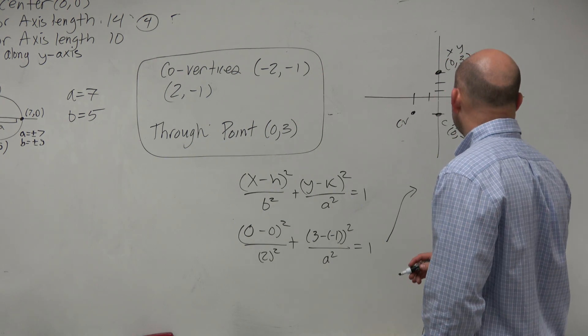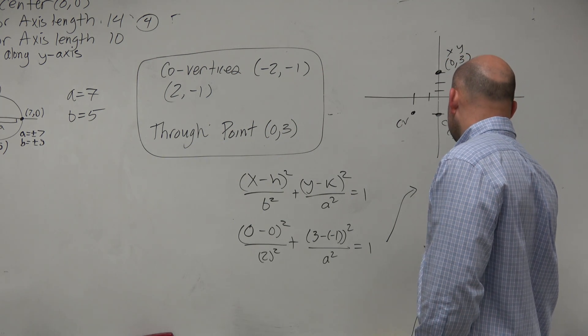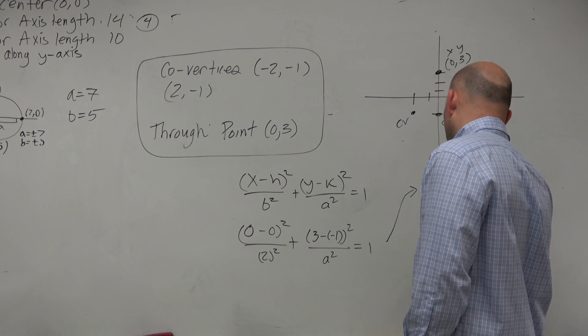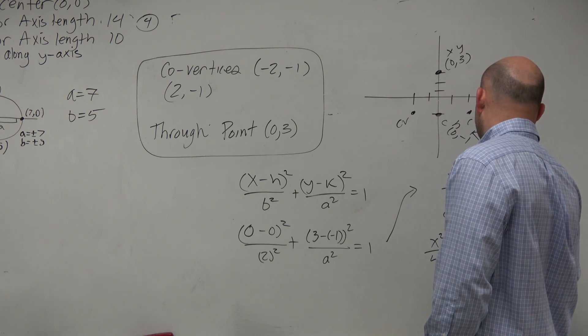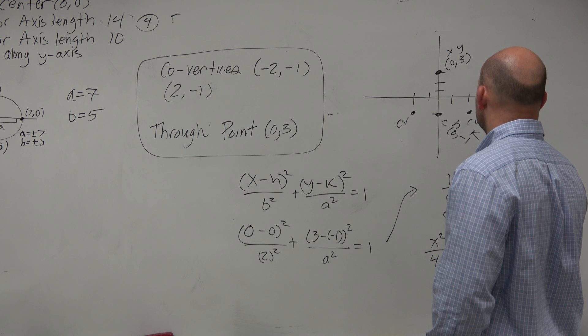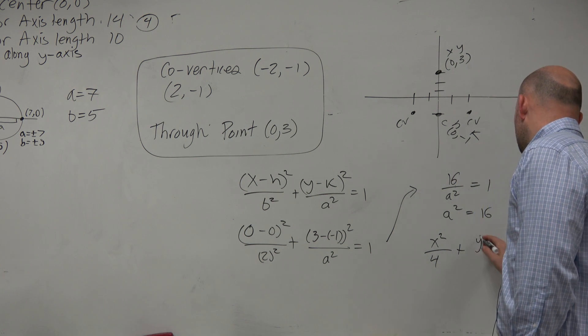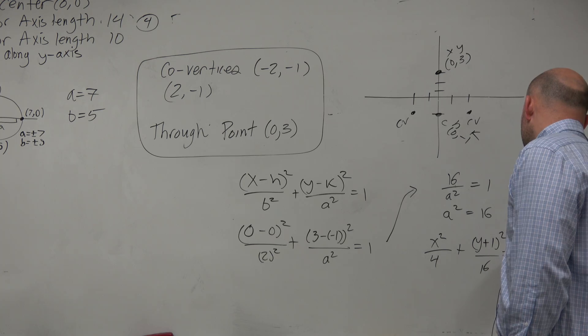So therefore, I'm just going to do x minus h, which that would be x squared over 4 plus y minus, or y plus 1, squared over 16 equals 1.